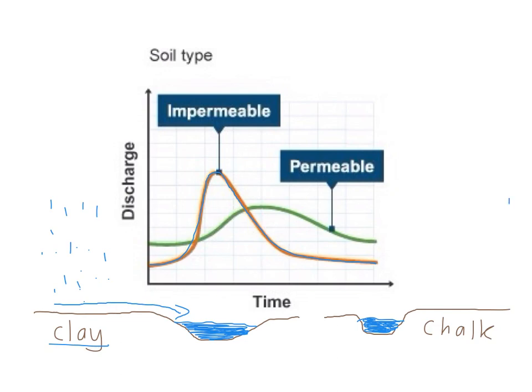Whereas on a landscape which is predominantly chalk geology, which is permeable, the water will be absorbed by the chalk and it will eventually make its way as groundwater flow into the river, but this may take quite a while. It can take days, which is why the permeable shaped hydrograph is non-flashy. It has a much longer lag time and it is more shallow.